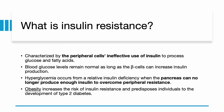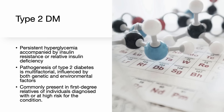Now let's discuss insulin resistance. Insulin resistance is characterized by the peripheral cells' ineffective use of insulin to process glucose and fatty acids. Blood glucose levels remain normal as long as the beta cells of the pancreas can increase insulin production. Hyperglycemia occurs from a relative insulin deficiency when the pancreas can no longer produce enough insulin to overcome peripheral resistance. Obesity increases the risk of insulin resistance and predisposes patients to development of type 2 diabetes, which is commonly present in first-degree relatives of individuals diagnosed with the condition.